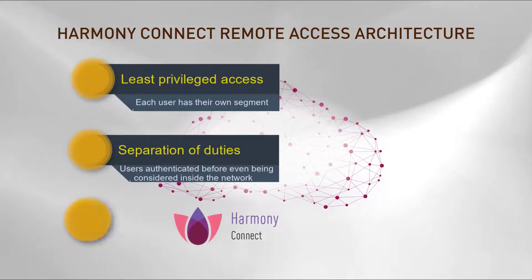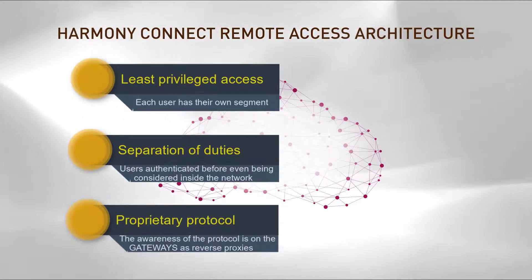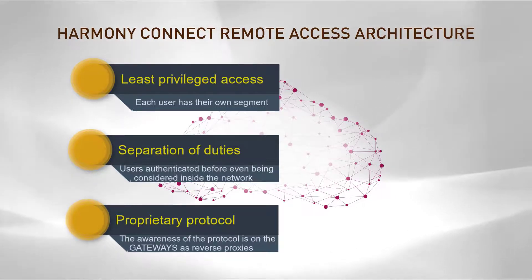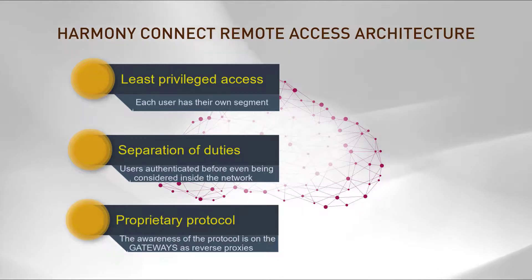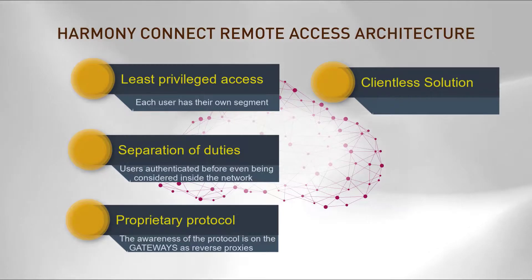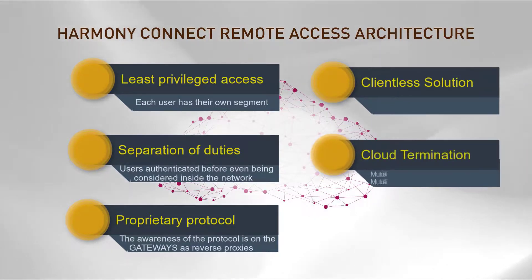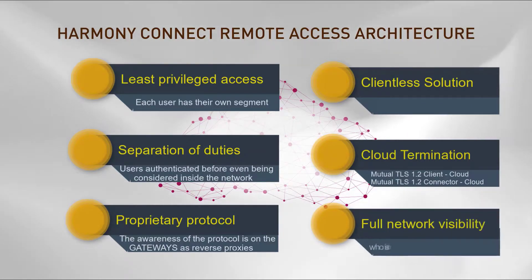Third, Harmony Connect uses a proprietary protocol and identity-over-proxies, which is a key differentiator from other ZTNA solutions. Protocol awareness is transitioned from the user device to the gateways — those reverse proxies that are identity and protocol aware — making the solution clientless. A termination point is created using mutual TLS from client to cloud and mutual TLS from connector to cloud, giving the gateway full visibility to admins into who is inside the network.